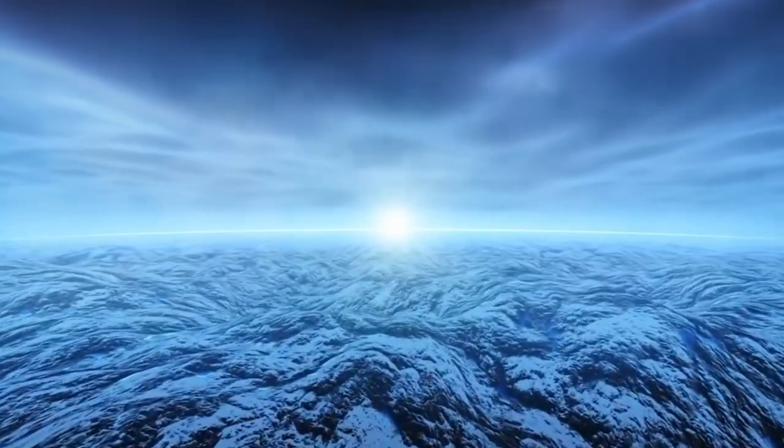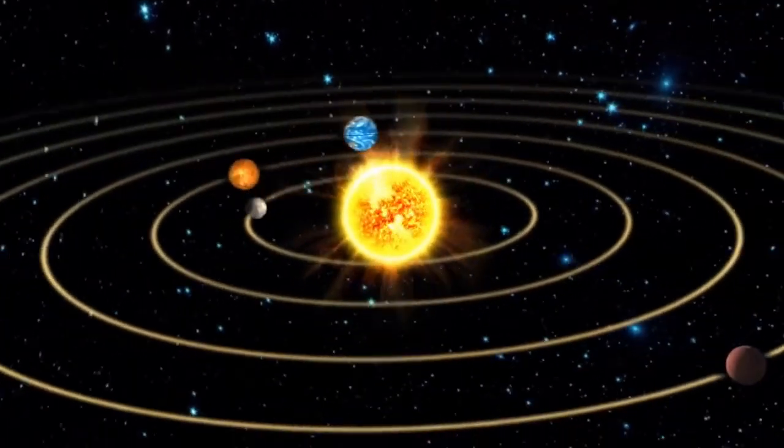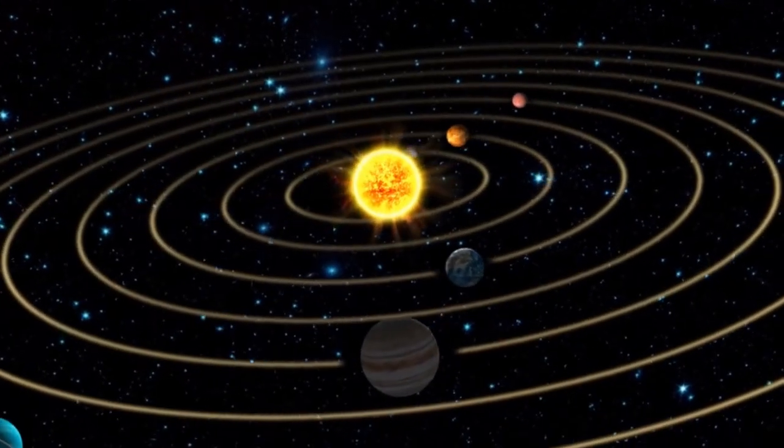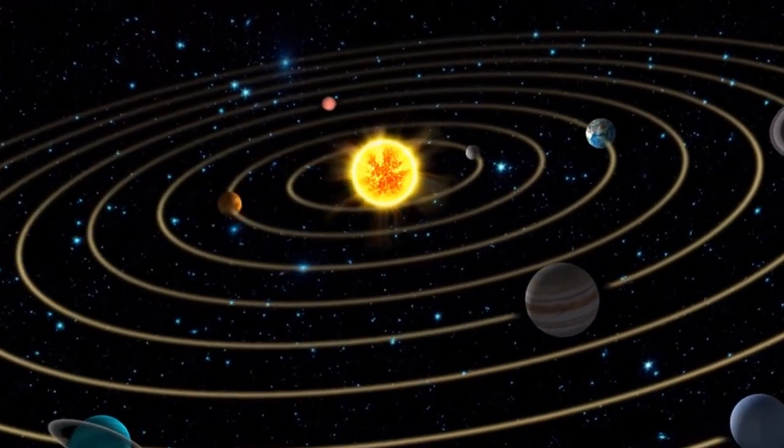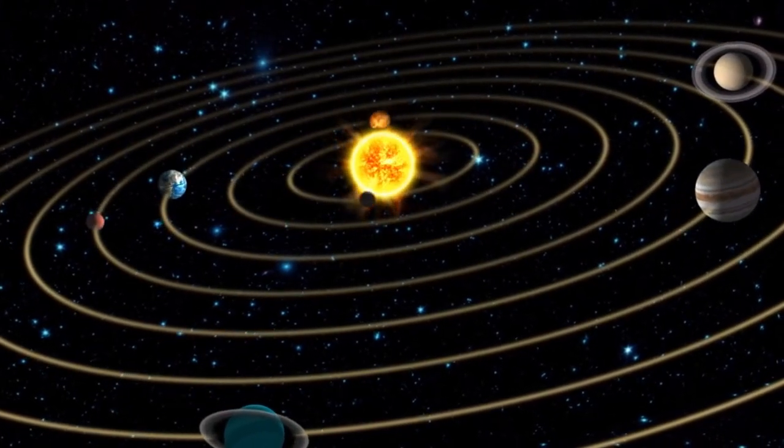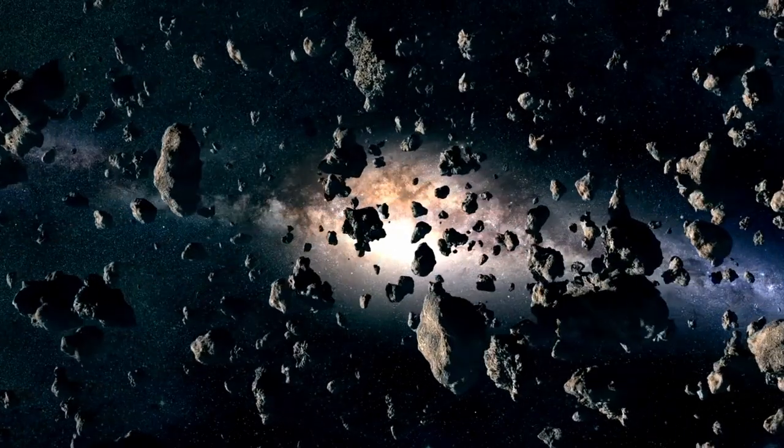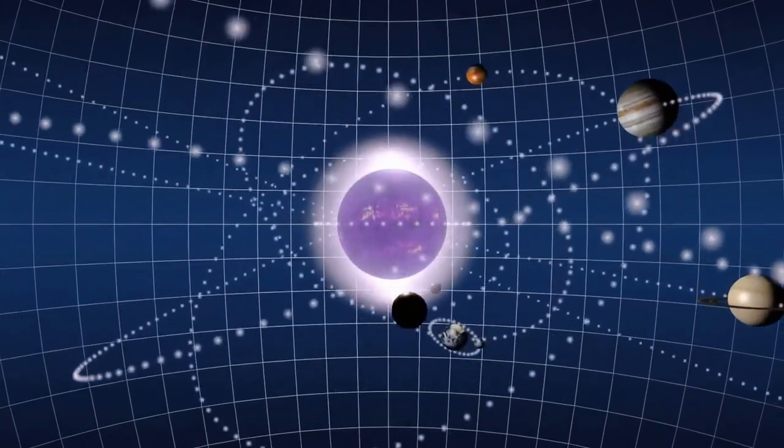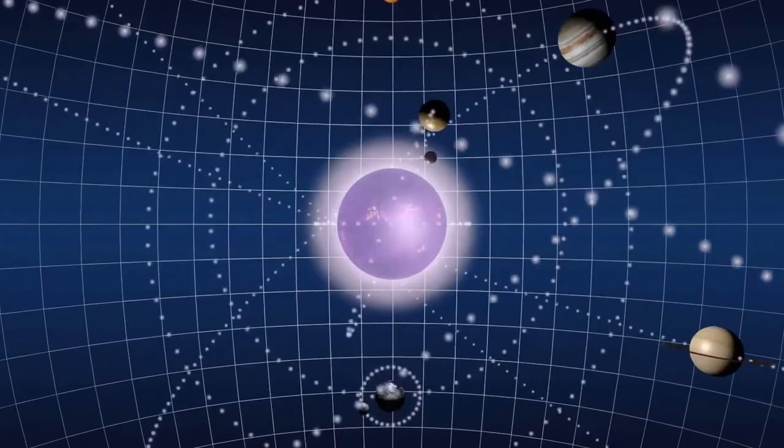Much of the gas, dust, and rocks gathered together during the formation of the solar system to create the sun and planets. The majority of the leftover debris was then carried by the planets into the sun or outside the solar system. However, as they slowly circled the sun, objects near the periphery of the solar system were far enough away to avoid being pulled in by the gravitational pull of the much larger planets like Jupiter.